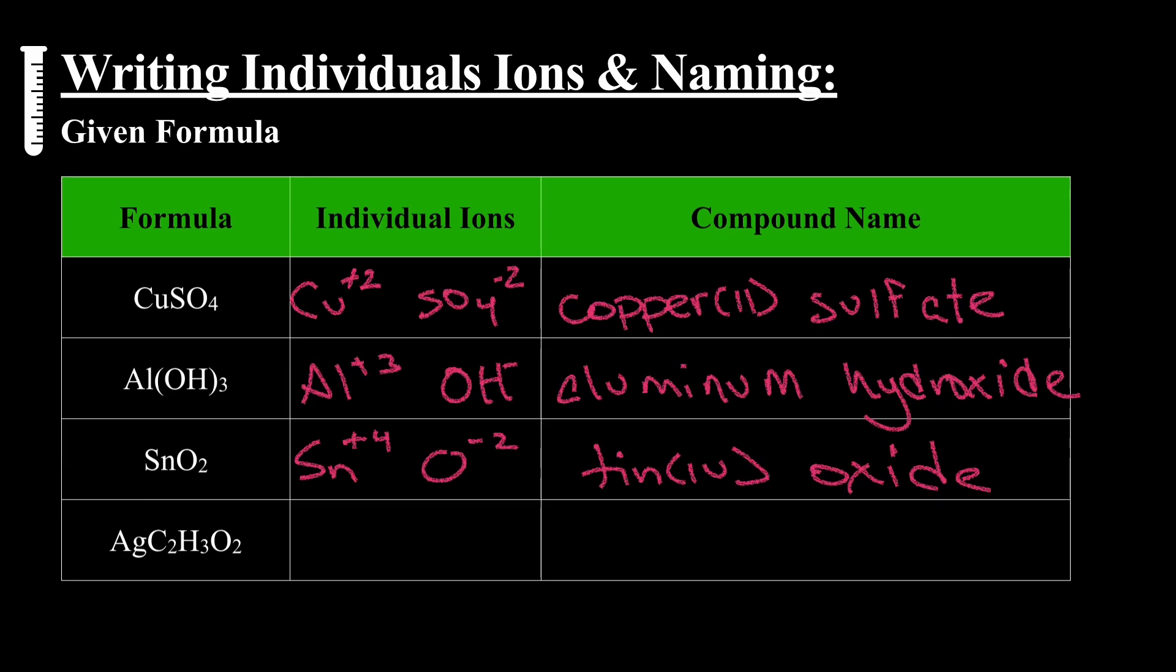This one also gets students, AgC2H3O2, oh man. They don't know where to split that. Split it at the first element, the cation. The cations always go first. So right there, split between the Ag and the rest of it. The rest of it's polyatomic.